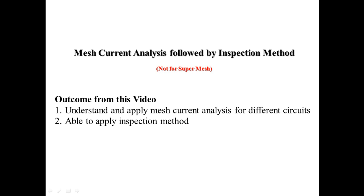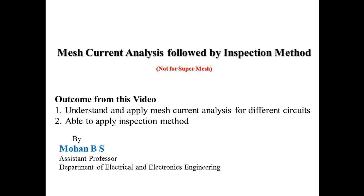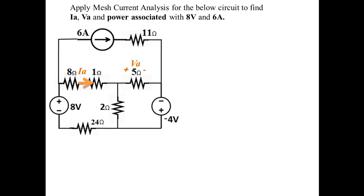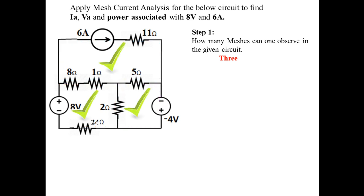Let's understand mesh current analysis followed by a shortcut method. In the given question there are four unknowns: IA, VA, power associated with 8 volts and 6 amperes. Let's apply mesh current analysis. Step 1 is to identify how many meshes there are — how many closed circuits. There are three: the first closed circuit, second closed circuit, and third closed circuit.